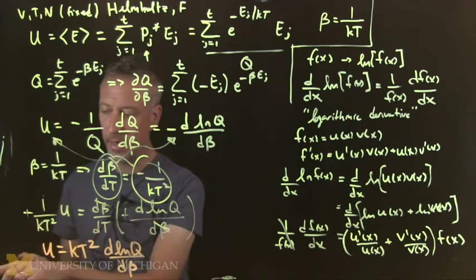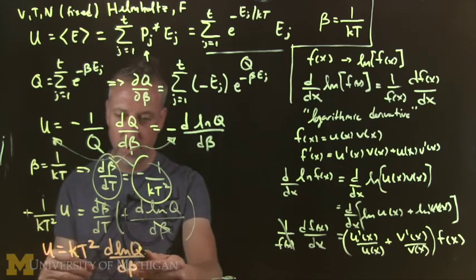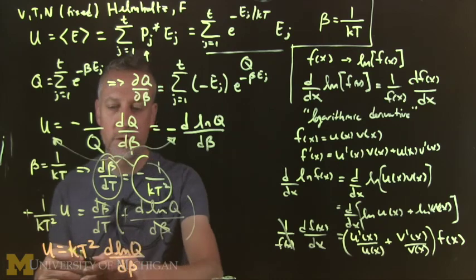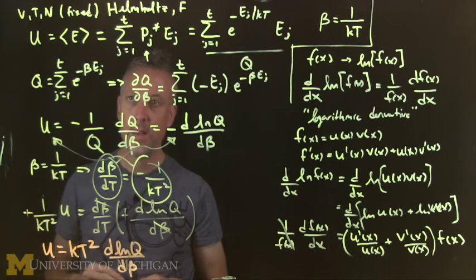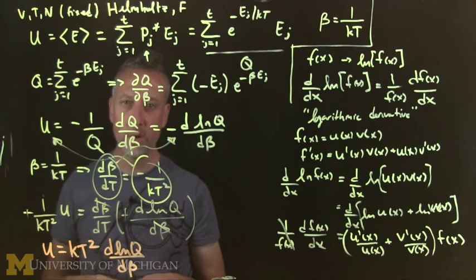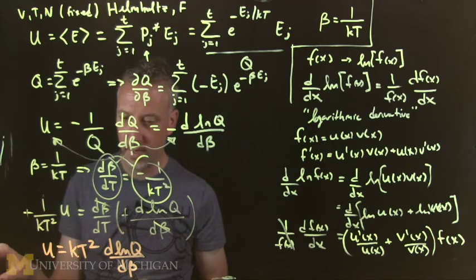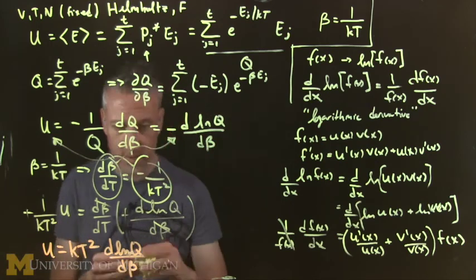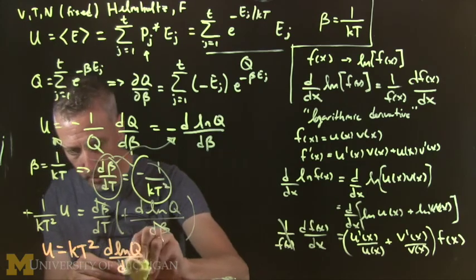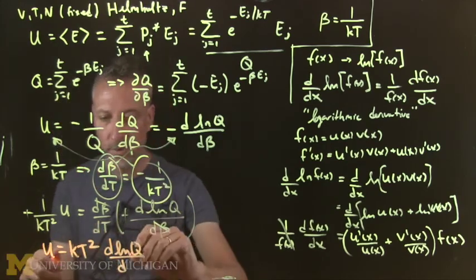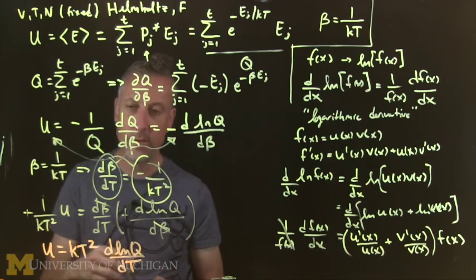So we have a direct link now between the partition function, temperature, which is a parameter, and the internal energy. Now you might think, why are we doing all this work? We could have just kept this simple formula here. Oops, I made a mistake again. So many mistakes. Very frustrating. The betas went away. So this should be temperature, right? So we converted it to a derivative with respect to temperature.